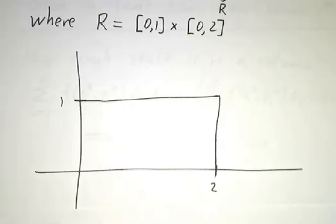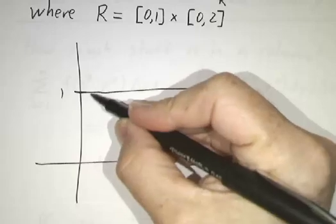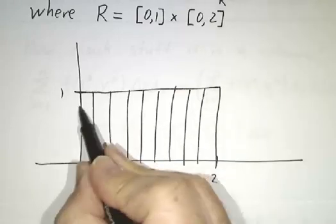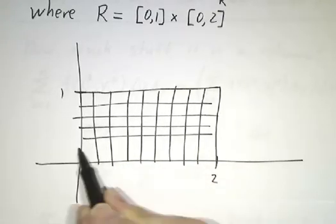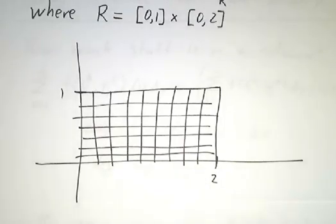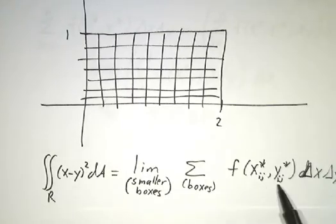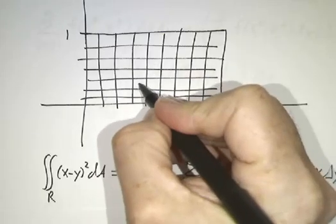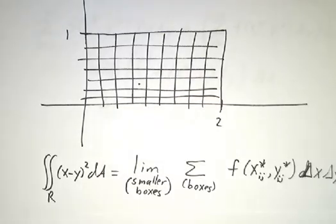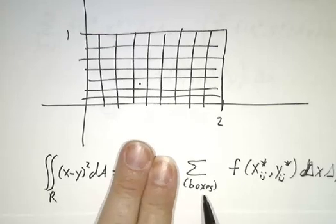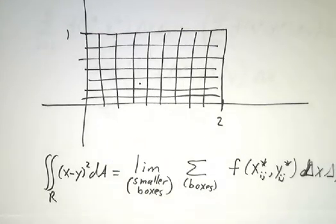Remember that what a double integral means is that we take this rectangle and chop it up into a bunch of little boxes. For each box, we pick a sample point xij* yij* somewhere in that box. Then we take the value of the function at that point and multiply it by the area of the box. We add up the contributions for all of the boxes to get an approximation, and then take the limit as we chop into smaller and smaller boxes.